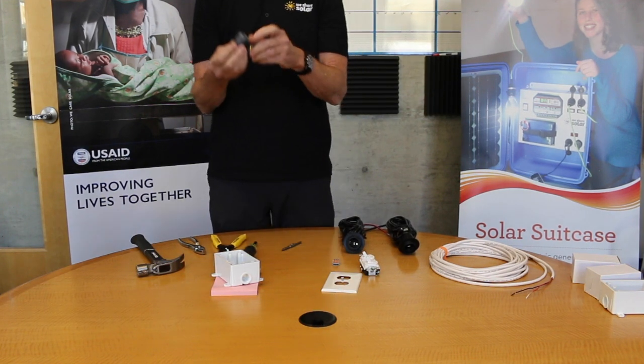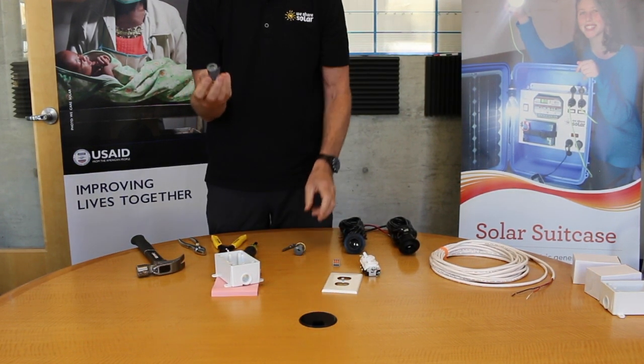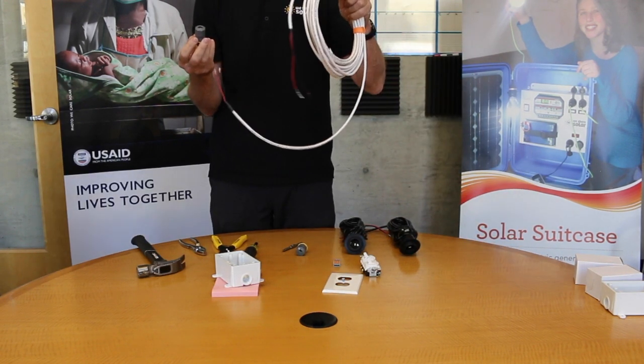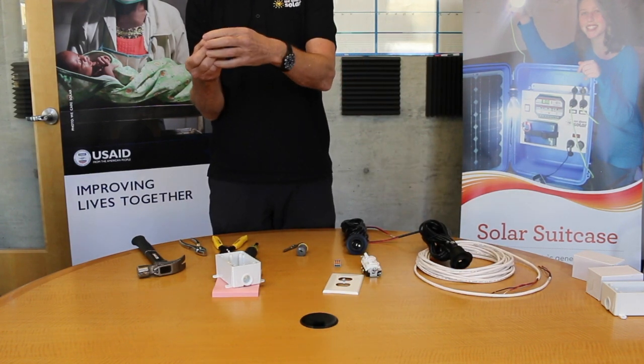Second step is to put in the cord grips. The cord grips are what hold the cables in place. Now the first cord grip is going to receive both the power-in cable and the lamp cable. So that means it's going to take up a lot of space. So I'm going to take off the cap of the cord grip.